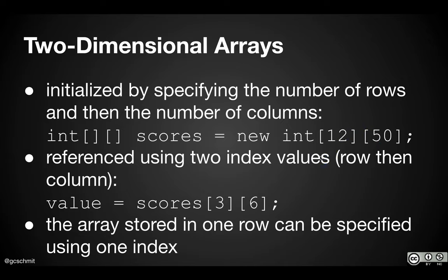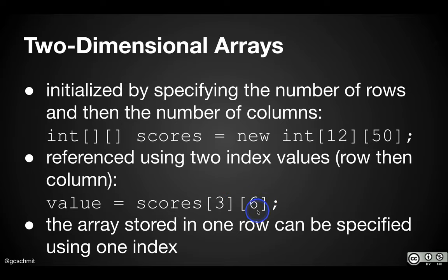Usually we do everything row and then column. When we say new int[12][50], this says create a two-dimensional array with 12 rows and 50 columns in each row. When I want to reference a specific value in that two-dimensional array, in the first square brackets I specify the index of the row — here's row index 3, the fourth row. In the second square brackets, I specify the index of the column — here's column index 6, the seventh column. This returns the value in that specified row and column.